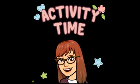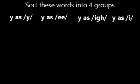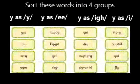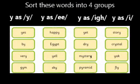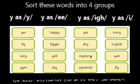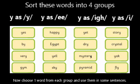And we're back to our activity time. Today we're going to be sorting into groups again. But this time we're going to be looking at the Y as a Y, the Y as an E, the Y as an I, and the Y as an I. So instead of three groups, we're sorting into four. There are your words to sort. And once you're finished, I would like you to choose one word from every group and write a sentence with each one.